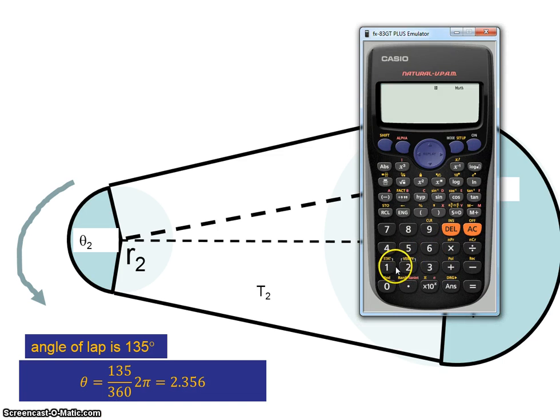So I have 135 divided by 360, and then I multiply that by 2π. This gives me three-quarters π, which is 2.356 radians.